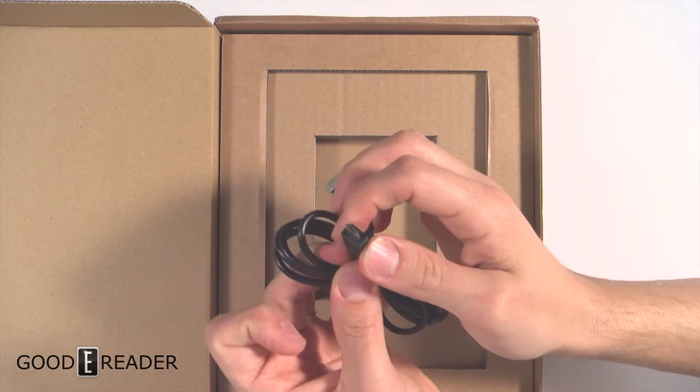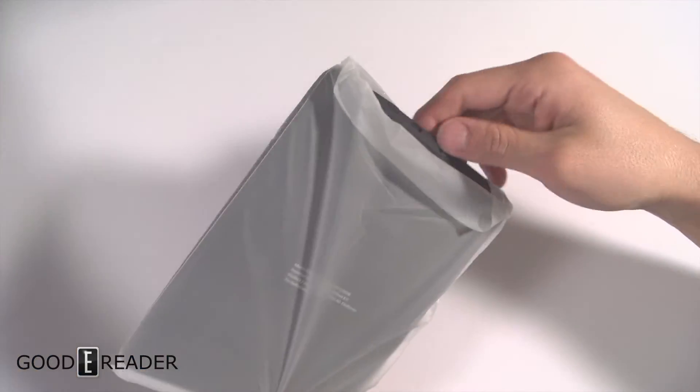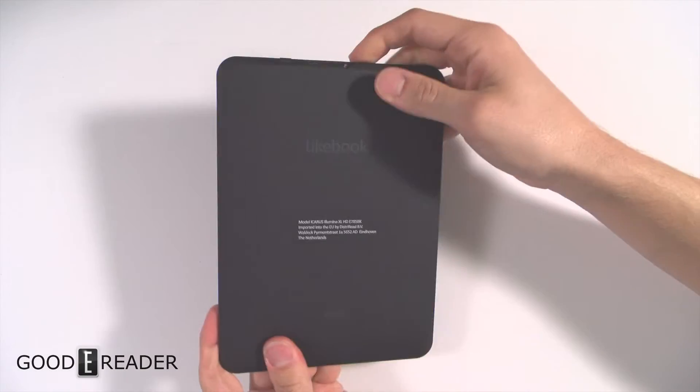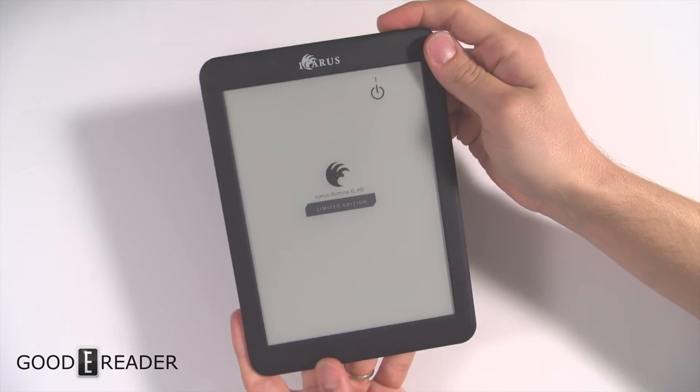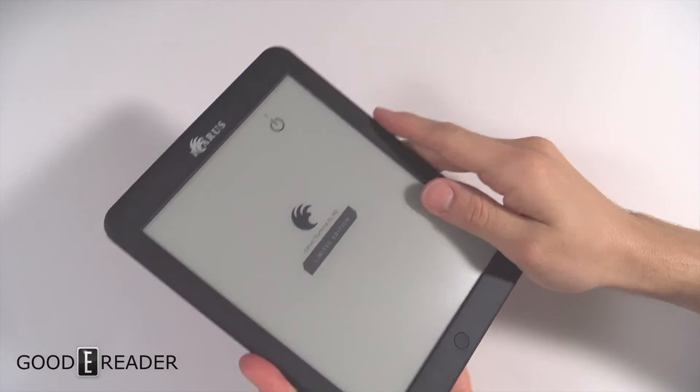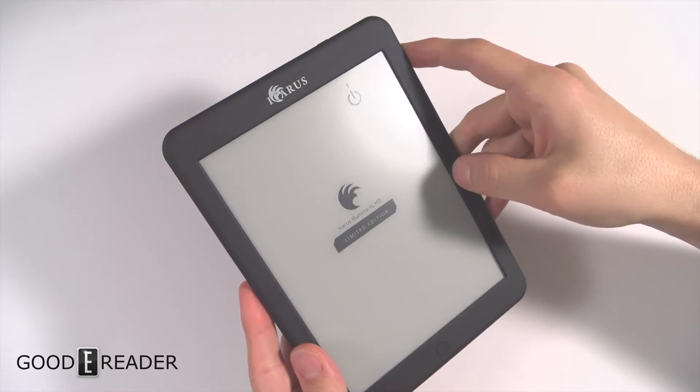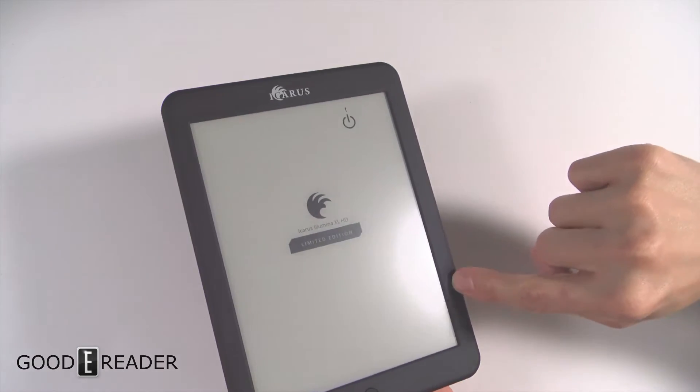The e-reader itself is right here. It says Likebook on the back. You have the Icarus logo. It is not flush screen and bezel, so you will have a little bit of a dip. It's not too bad, and actually the bezel is beveled, which means it kind of goes on a little angle.